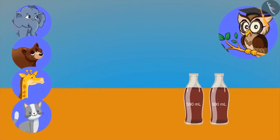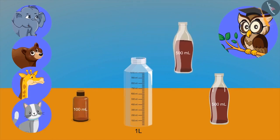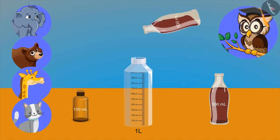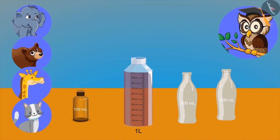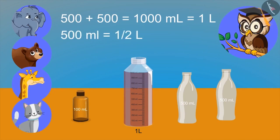Look, I have two bottles of cold drink and these empty bottles of one litre and one hundred millilitre. Now try to pour this cold drink into the empty bottle. We cannot put 500 ml in a hundred millilitre bottle. Now try to put this in the empty bottle of one litre. Oh, it became full now! So what have we learned? Two 500 ml bottles make a litre. Adding 500 millilitre to 500 millilitre gives 1000 ml. 500 ml is also known as half a litre.